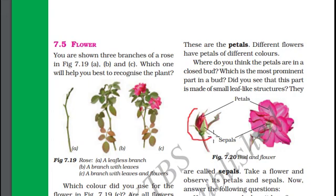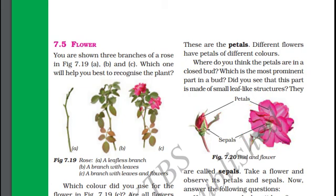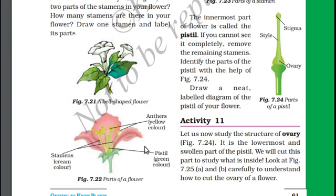This is a bud. After some time the bud will turn into a wonderful flower. The beautiful colored part in a flower or bud is called petals. The green part around the petals is known as sepals.